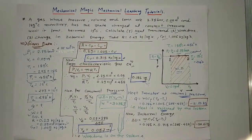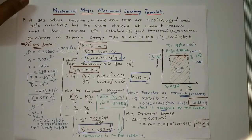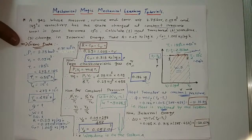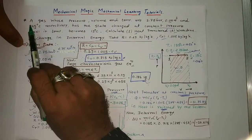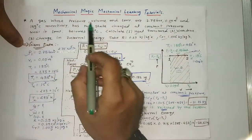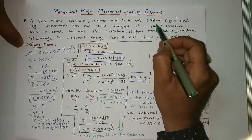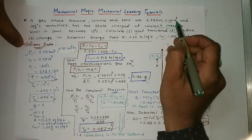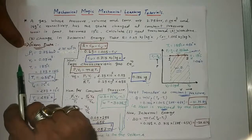Welcome to my YouTube channel, Mechanical Magic Mechanical Learning Tutorials. In this video I would like to solve one of the examples on constant pressure process. The given data: a gas whose pressure, volume, and temperature are 2.75 bar, 0.09 meter cube, and 185 degrees centigrade respectively.